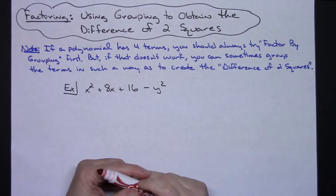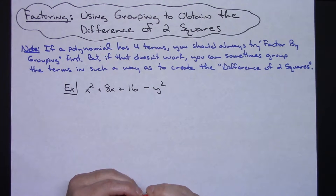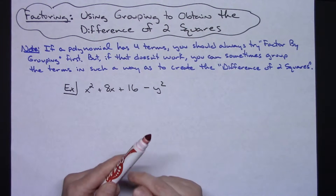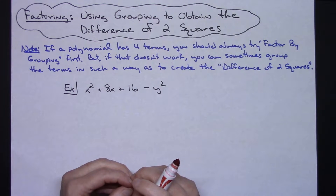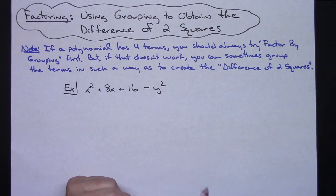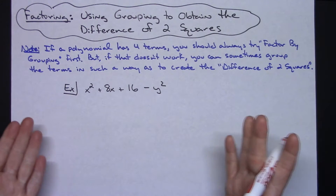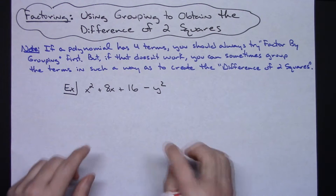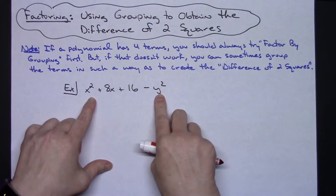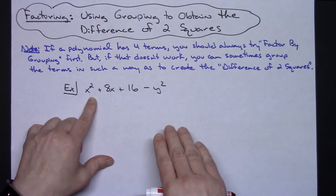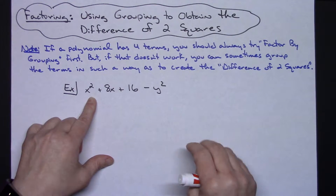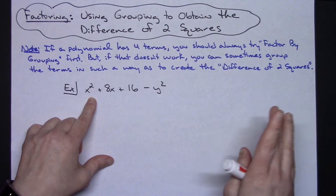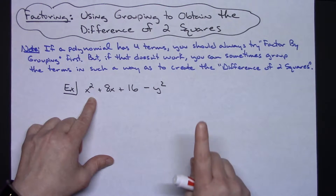In this video I'm going to be taking a look at some factoring. Specifically we're going to be doing two examples where we are going to use grouping to obtain the difference of two squares. This is going to come in handy if you have four terms. The very first thing you should always try is taking out that greatest common factor and then try factoring by grouping because that's the most common.